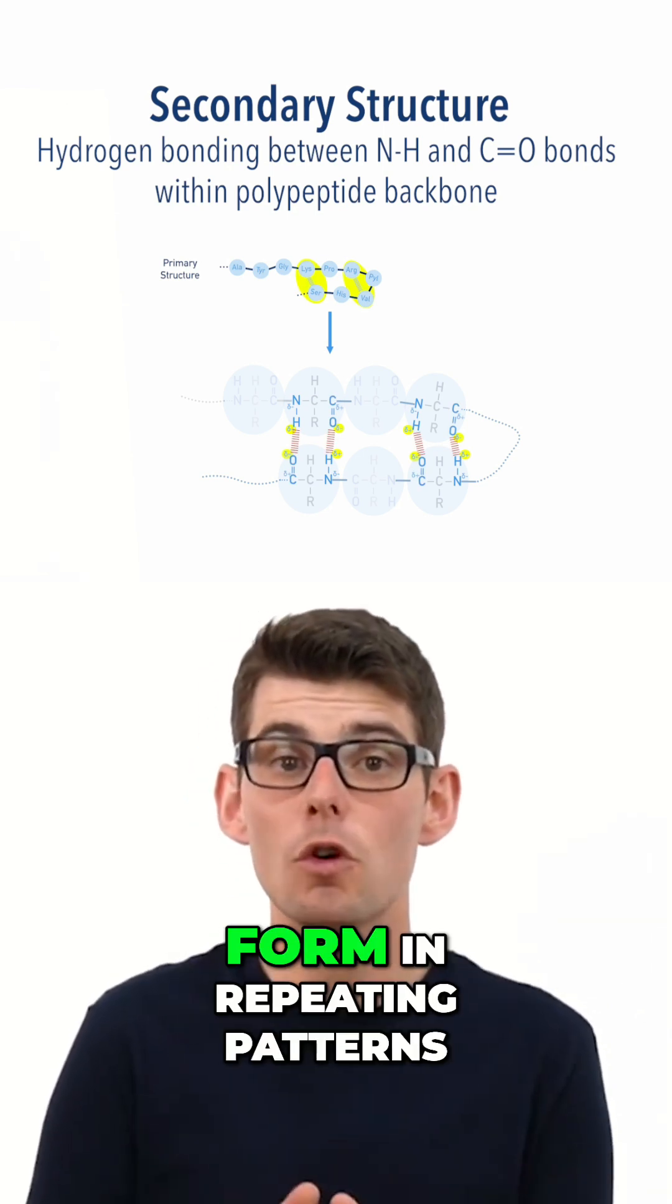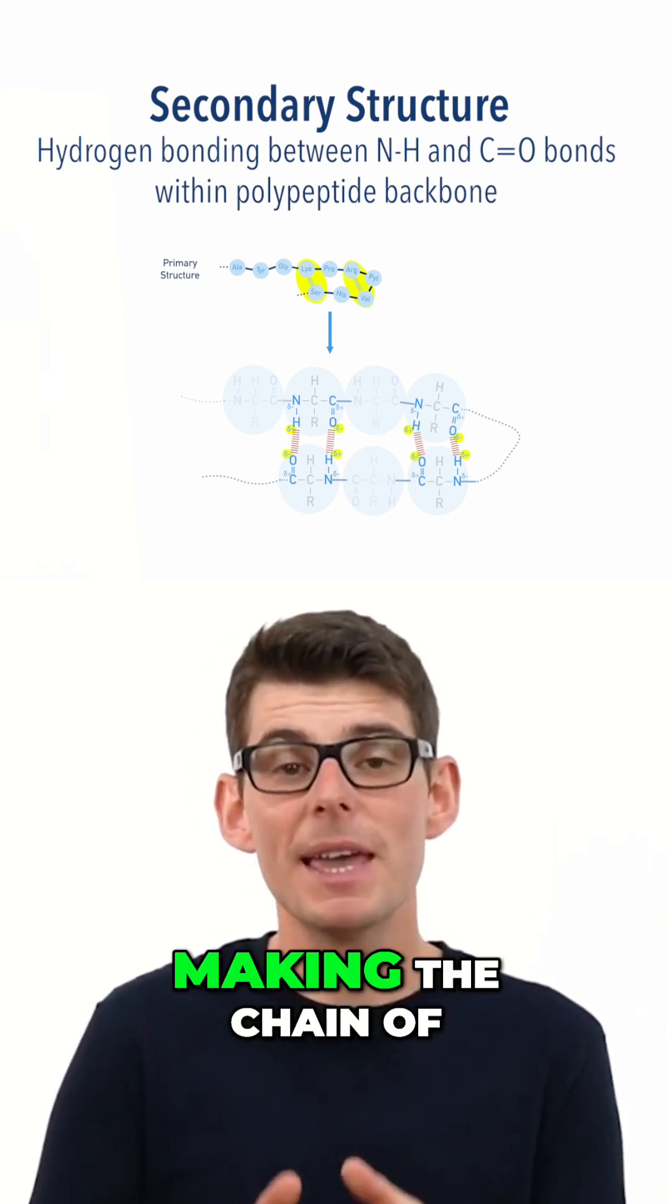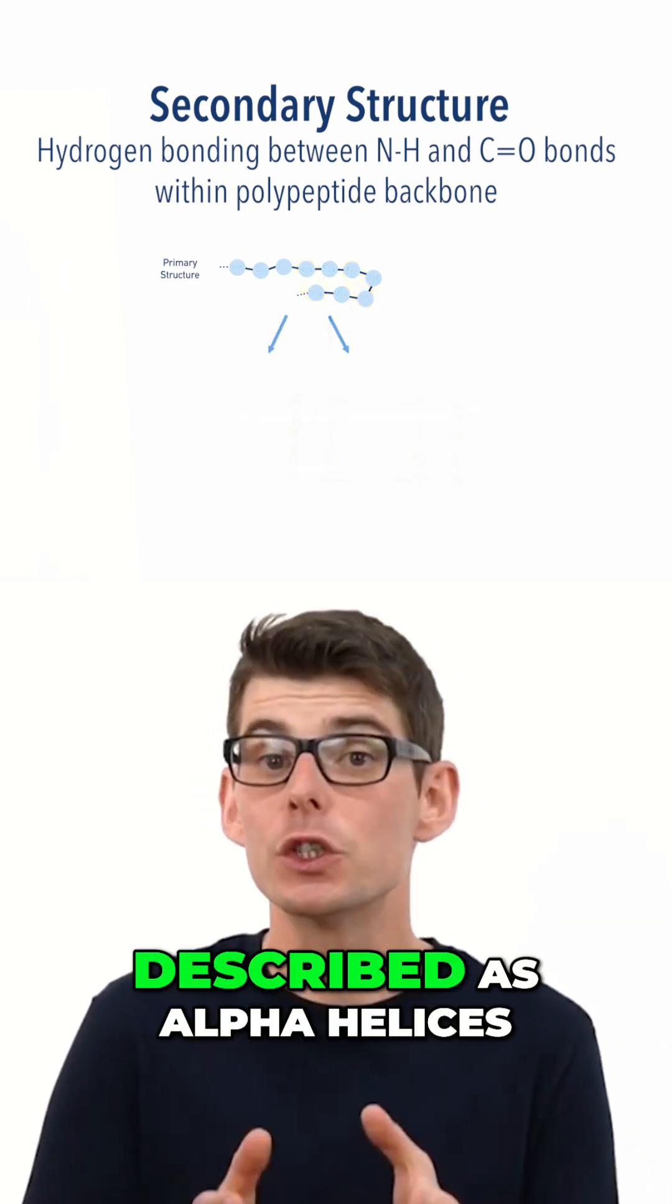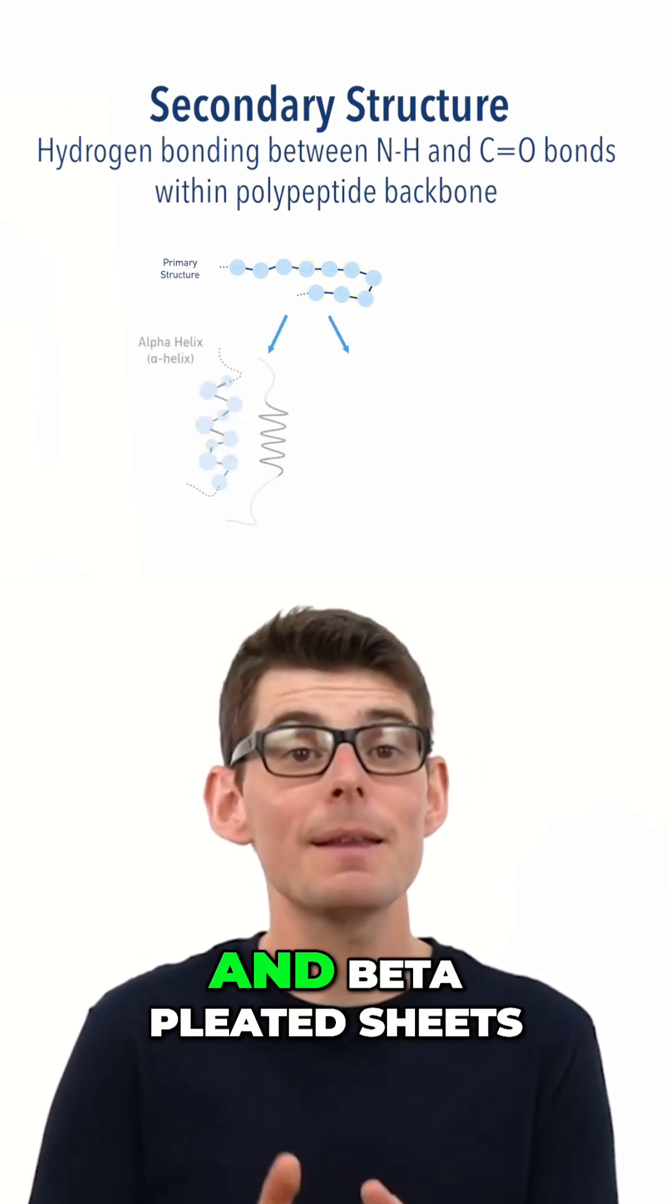These hydrogen bonds can form in repeating patterns, making the chain of amino acids fold or twist in two possible ways, described as alpha helices and beta pleated sheets.